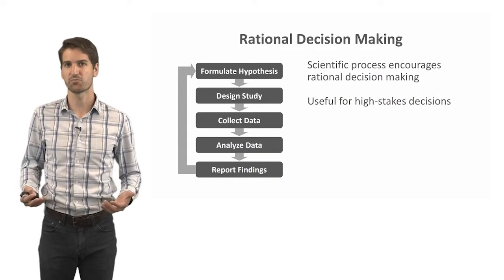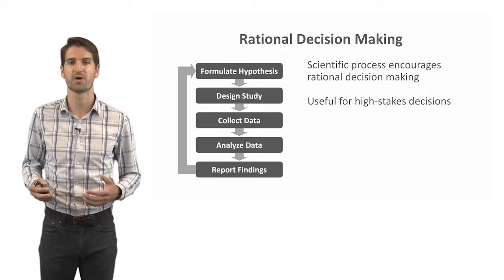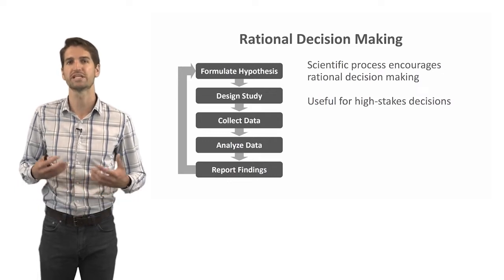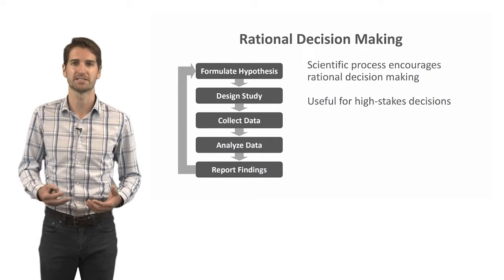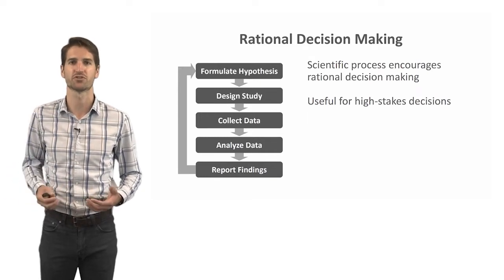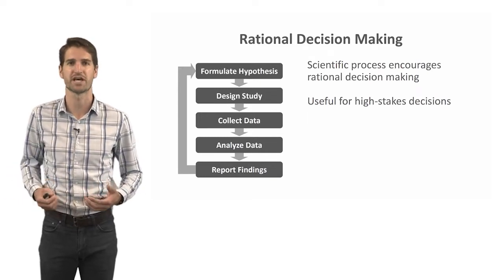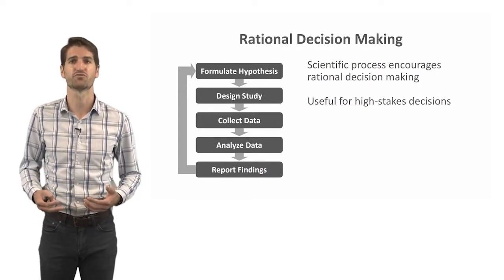The scientific process can be thought of as one type of rigorous problem solving, as it is based around formulating a hypothesis—which is really like identifying a problem—and then collecting data to evaluate the problem and different decision alternatives you might consider. The rational decision making model is especially useful for high-stakes decisions.